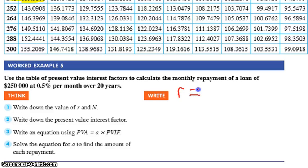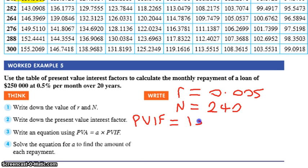Cool. So which one's which? What's my r? 0.005. N? 240. Excellent. My PVIF? 139.5808. Excellent.